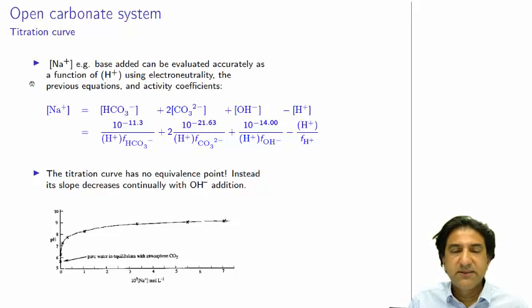Let's look at the titration curve now, adding NaOH. If we add Na into the system, NaOH, we can solve using the electroneutrality condition.